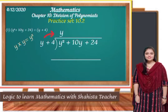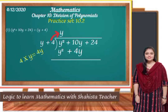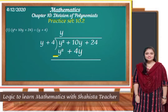Y into y gives us y². So in the quotient we will put y. Y into y gives y², and we write y² under the dividend. Now 4 into y gives 4y, so we write plus 4y. Now we have y² + 4y, and we subtract it. So y² minus y² cancels, and 10y minus 4y gives 6y.